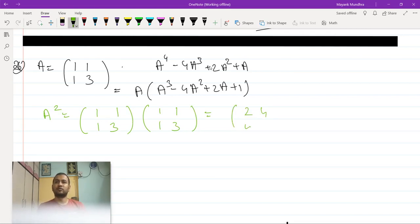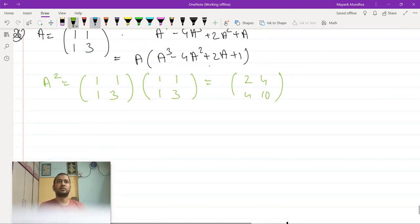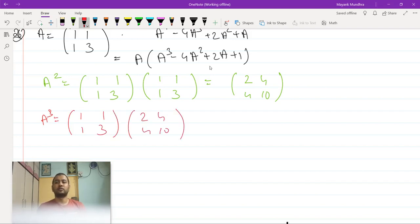At the same time here A cube is [[1,1],[1,3]] times [[2,4],[4,10]] so that will come out to be [[6,14],[14,34]].